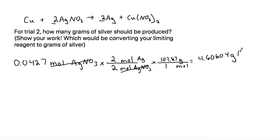4.607 grams of Ag. Our original number was in three sig figs, so we need to round to three sig figs. So our final answer would be 4.61 grams of Ag.